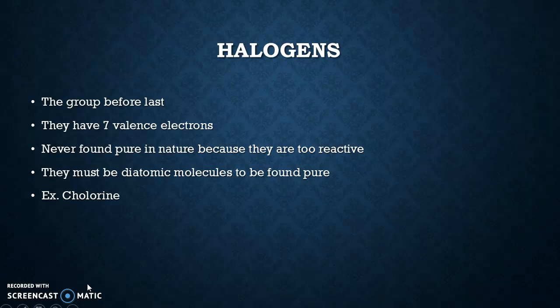That's one of the reasons why halogens want to bond with other things — like sodium, for instance. When they do that, they end up forming an ionic bond. They are gaining an electron from sodium and it keeps them both stable.